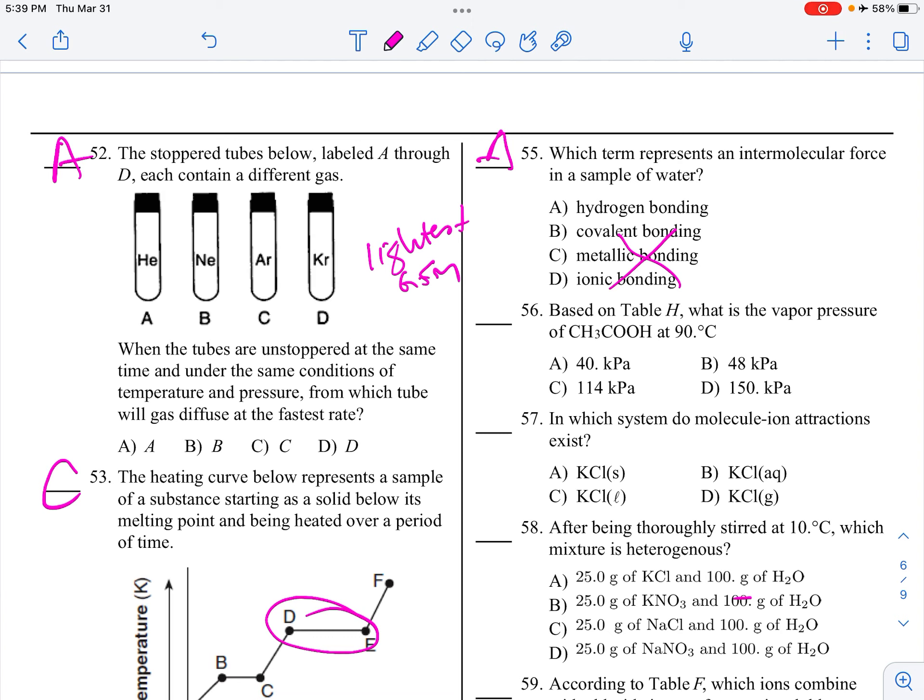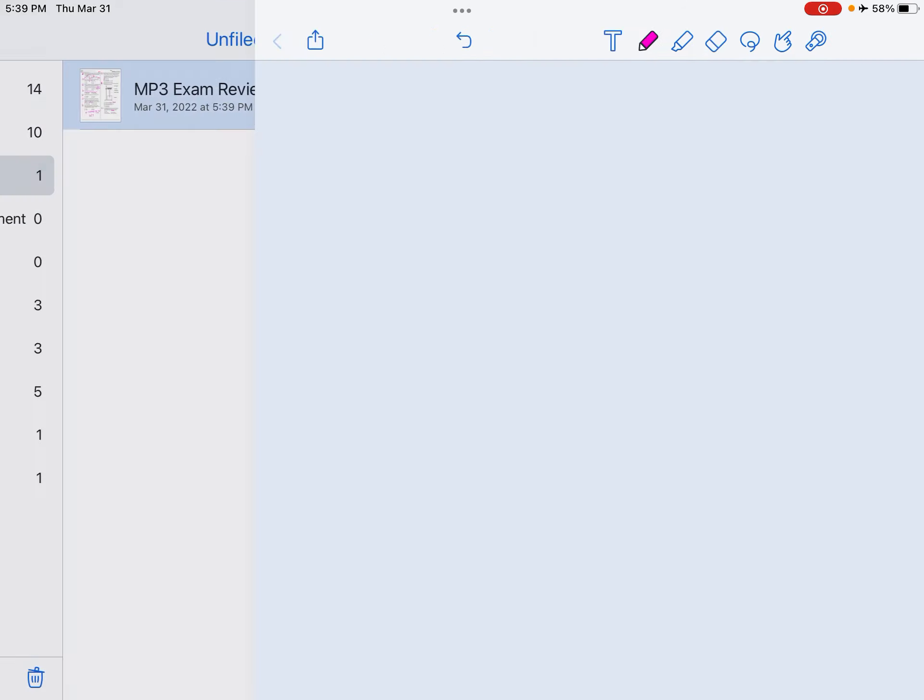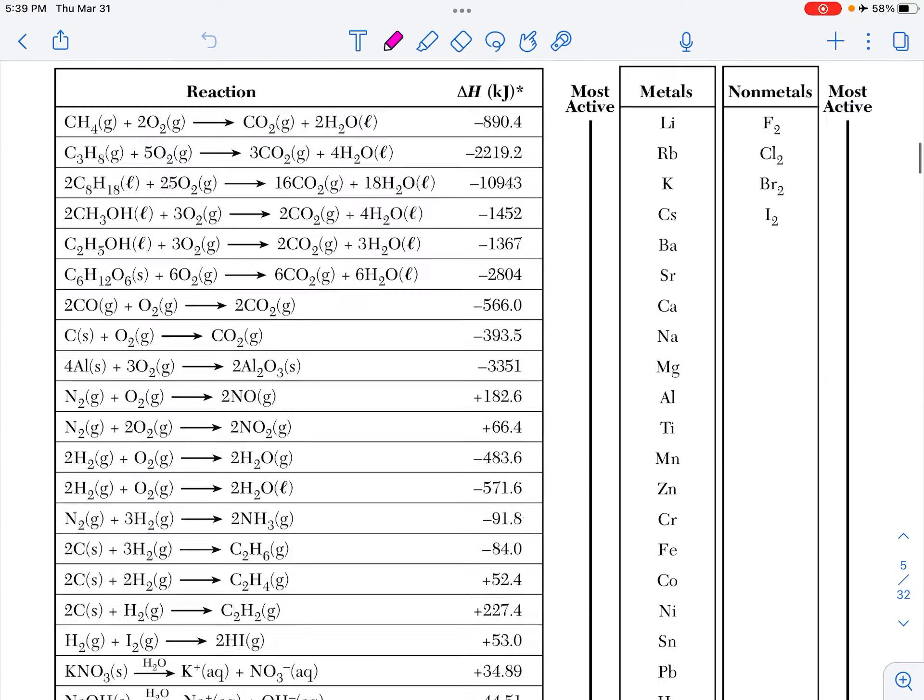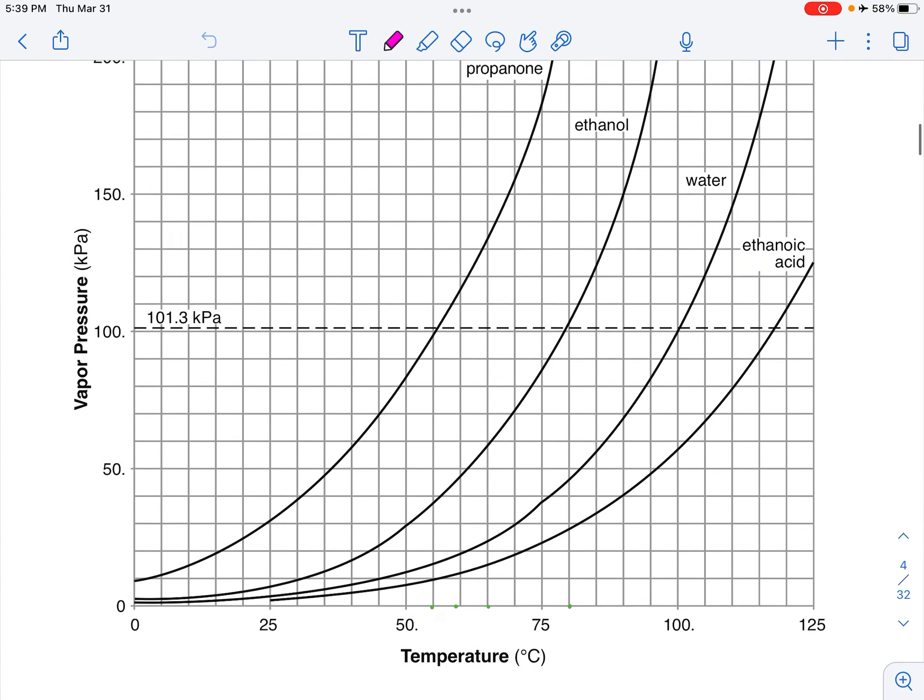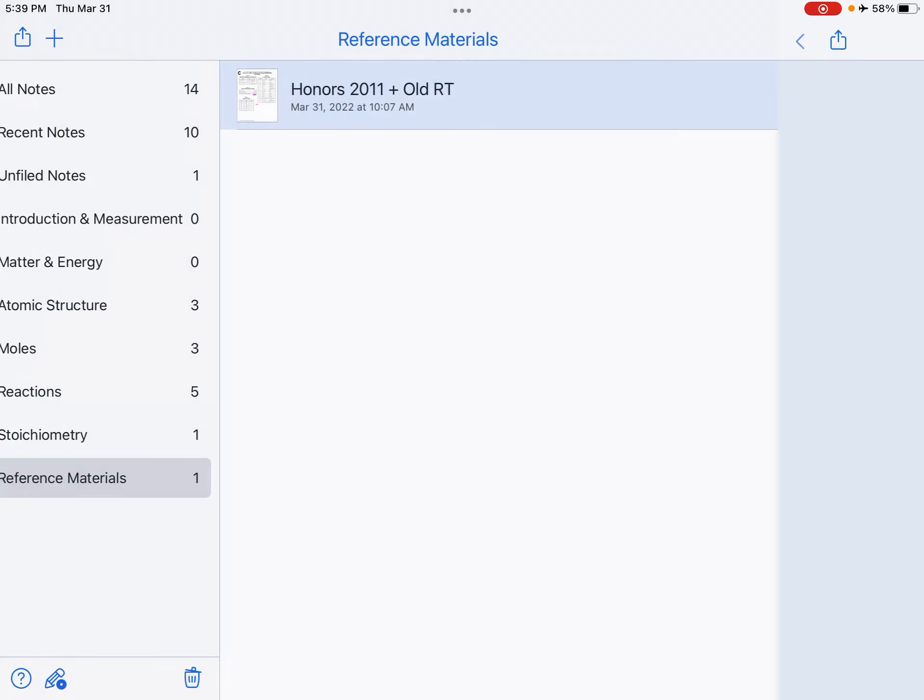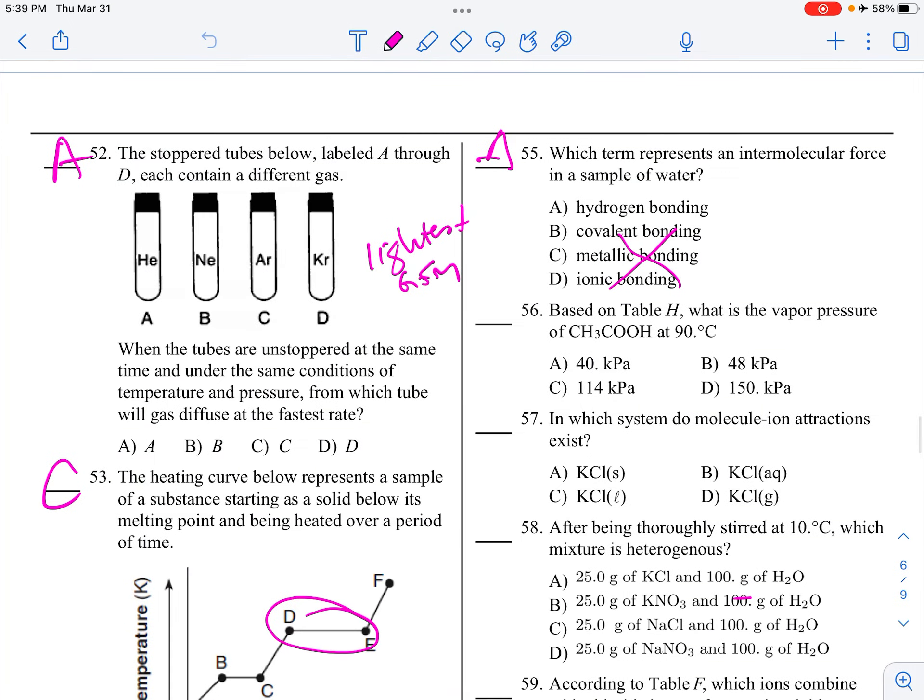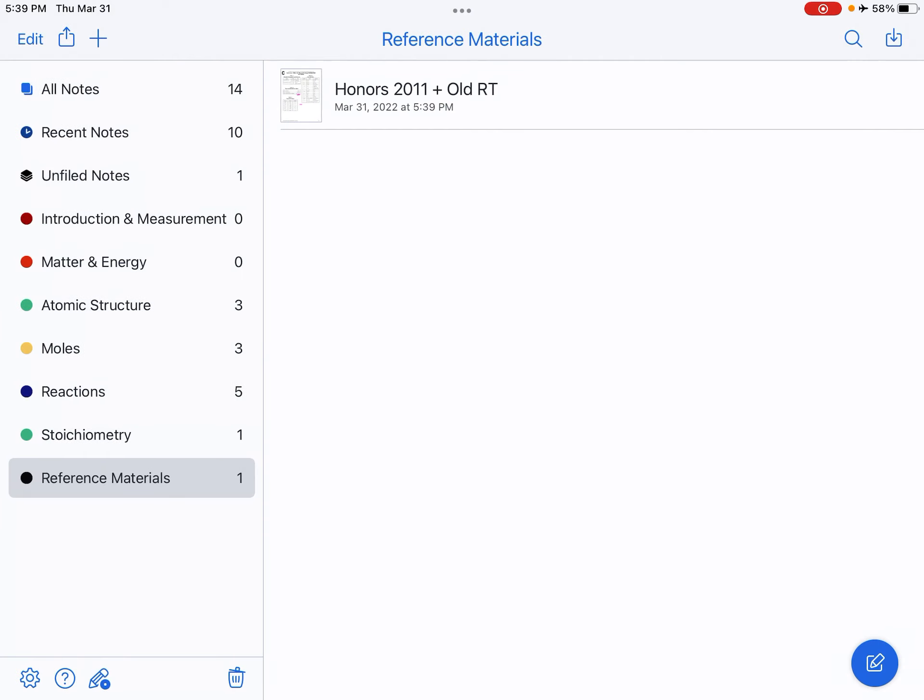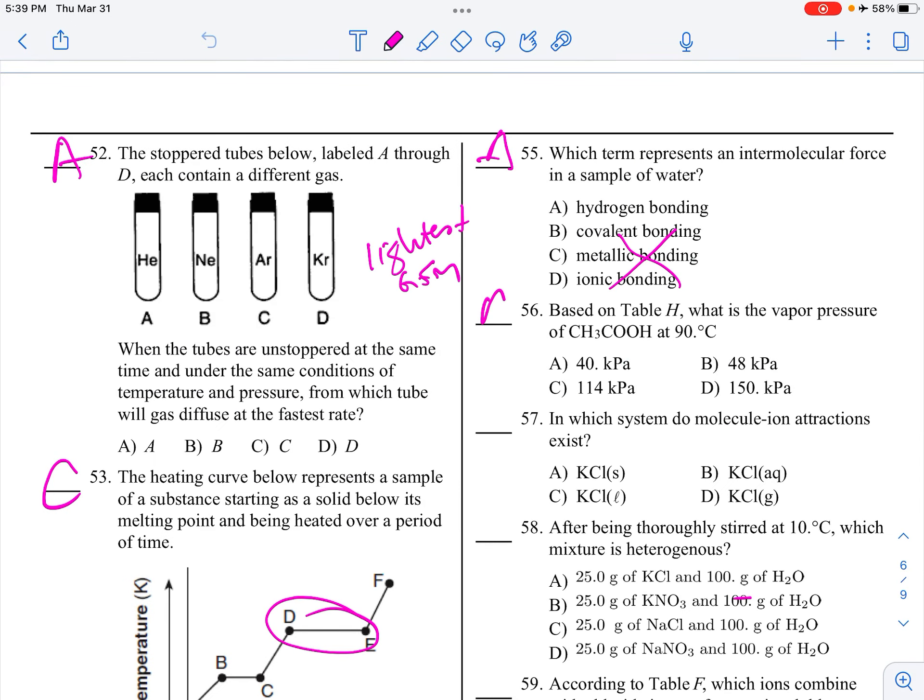Based on Table H, what is the vapor pressure of acetic acid at 90 degrees Celsius? Let me find Table H, acetic acid, which is ethanoic acid, 90 degrees. So 80, 85, 90 degrees, ethanoic acid. That's 10, 20, 30, 40 kilopascals. Choice A.